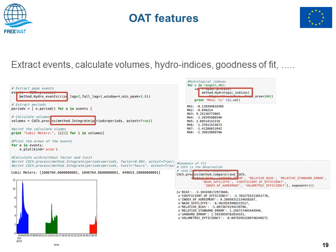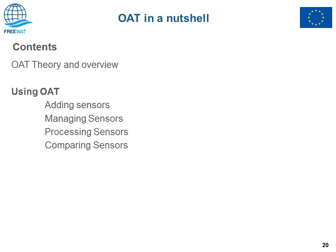You can extract events, calculate volumes, calculate some hydrological indexes, and compare two different time series and see the goodness of fit using statistical indexes. After this short introduction to the OAT theory and concept, we can start to use OAT in practice and see how to apply it within the FreeWAT plugin.